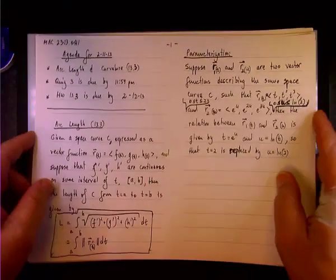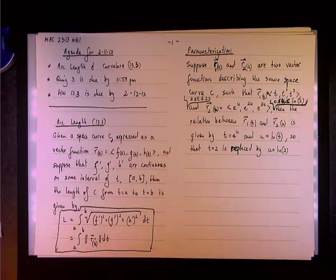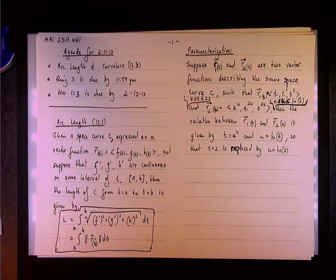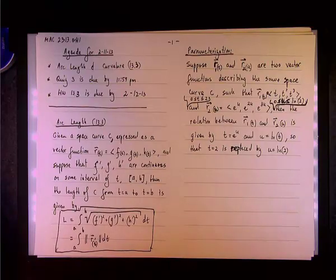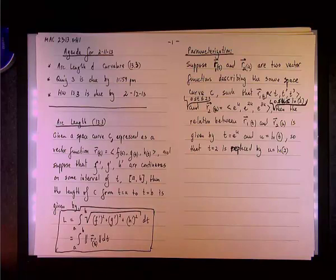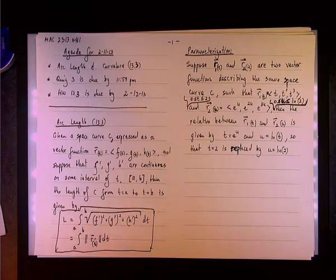If you remember from Calculus 2, when we learned the arc length, the arc length is a value. I mean, if you have a specific end point, the curve starts at a certain value of t and goes all the way to another value of t, then you have a certain value. But what happens if you don't want to specify the end points? If you want to come up with a generic expression for the algorithm, then essentially what you're saying is...